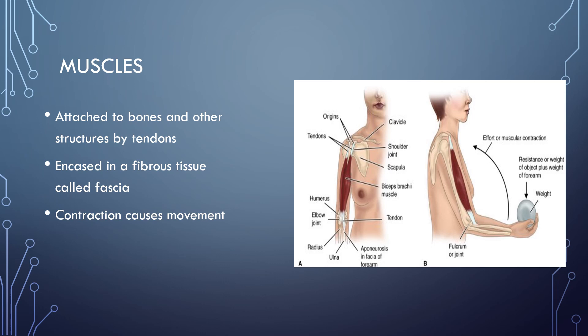When our muscles contract or get shorter, this causes movement of the body part the muscles are connected to. Muscles also have the ability to get stronger and weaker. When they get stronger, we call it hypertrophy, and when they get weaker, we call it atrophy.